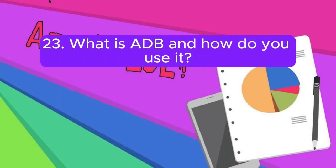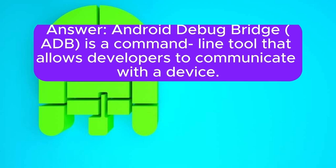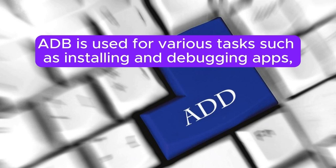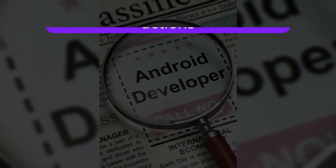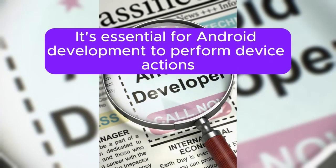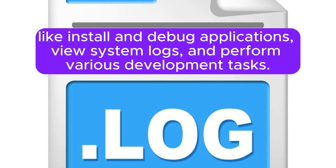Question 23: What is ADB and how do you use it? Android Debug Bridge (ADB) is a command-line tool that allows developers to communicate with a device. ADB is used for various tasks such as installing and debugging apps, and provides access to a Unix shell to run commands on a device. It is essential for Android development to perform device actions like installing and debugging applications, viewing system logs, and performing various development tasks.